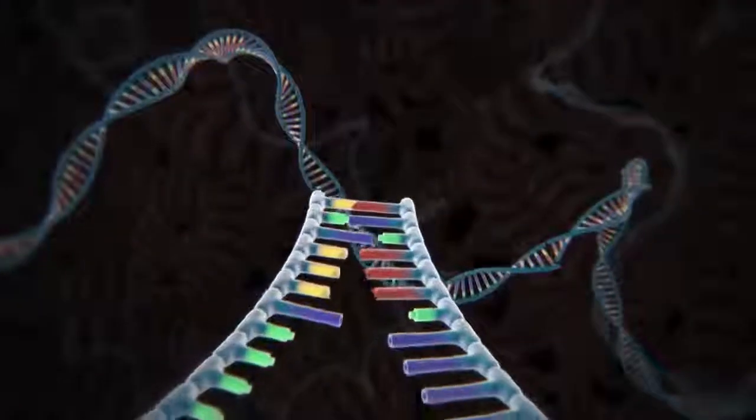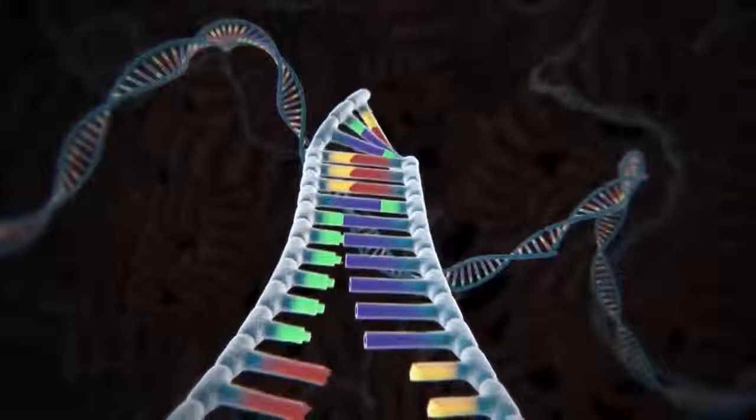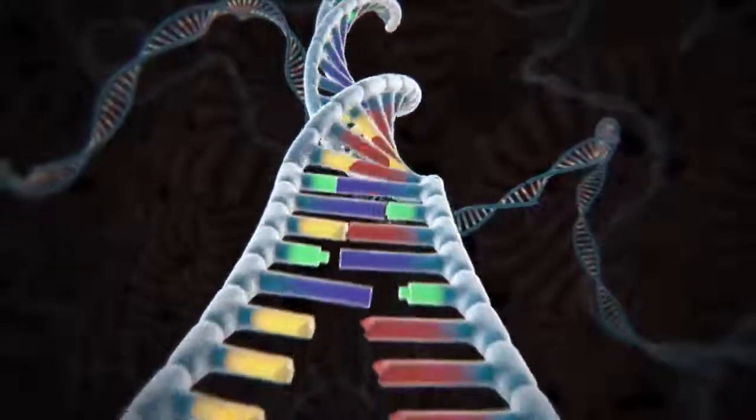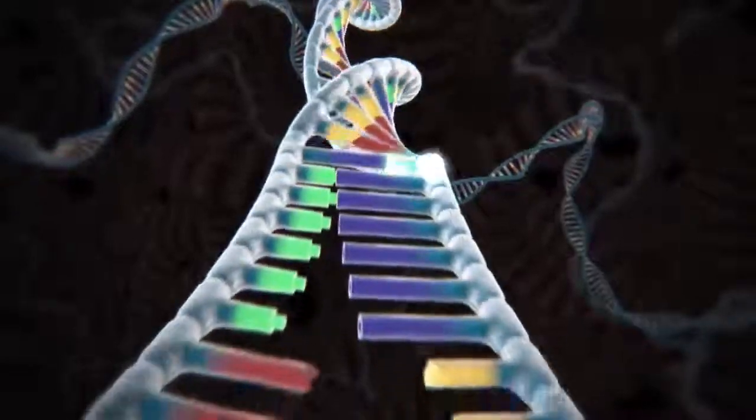DNA consists of two strands twisted into a double helix and held together by a simple pairing rule. A pairs with T and G pairs with C.